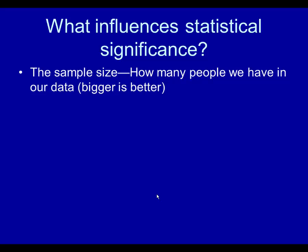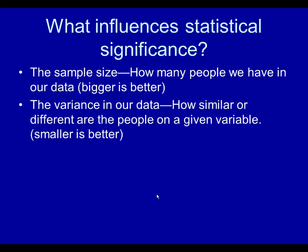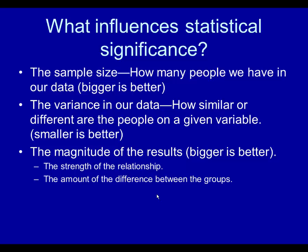What influences statistical significance? The sample size influences it — how many people we have in our data. In this case, bigger is better: the larger your sample, the more likely you are to achieve statistical significance. Second, the variance in the data — how similar or different are the people on a given variable. In this case, smaller is better: if people are less variant in your sample, you are more likely to have statistical significance. Third, the magnitude of the results — bigger is better. We're talking about the strength of the relationship or the amount of difference between groups. If there is a big difference, that is a stronger relationship and more likely to achieve statistical significance.